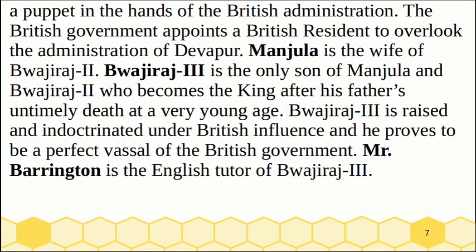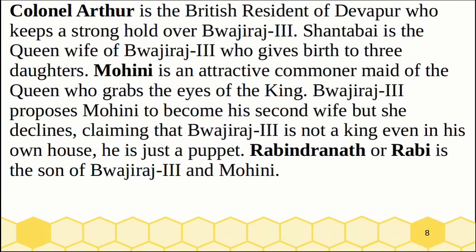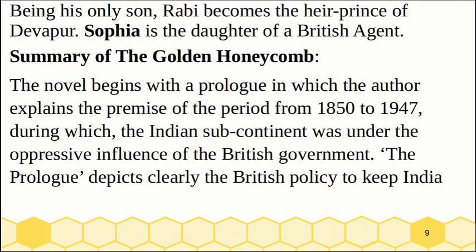Manjula is the wife of Bajirao II. Bajirao III is the only son of Manjula and Bajirao II, who becomes the king after his father's untimely death at a very young age. Bajirao III is raised and indoctrinated under British influence and proves to be a perfect vessel of the British government. Mr. Barrington is the English tutor of Bajirao III. Colonel Arthur is the British resident of Devpur who keeps a stronghold over Bajirao III. Shantabai is the queen wife of Bajirao III who gives birth to three daughters. Mohini is an attractive commoner maid of the queen who grabs the eyes of the king. Bajirao III proposes Mohini to become his second wife, but she declines, claiming that Bajirao III is not a king even in his own house — he is just a puppet. Rabindranath, or Rabi, is the son of Bajirao III and Mohini. Being his only son, Rabi becomes the heir prince of Devpur. Sophia is the daughter of a British agent.